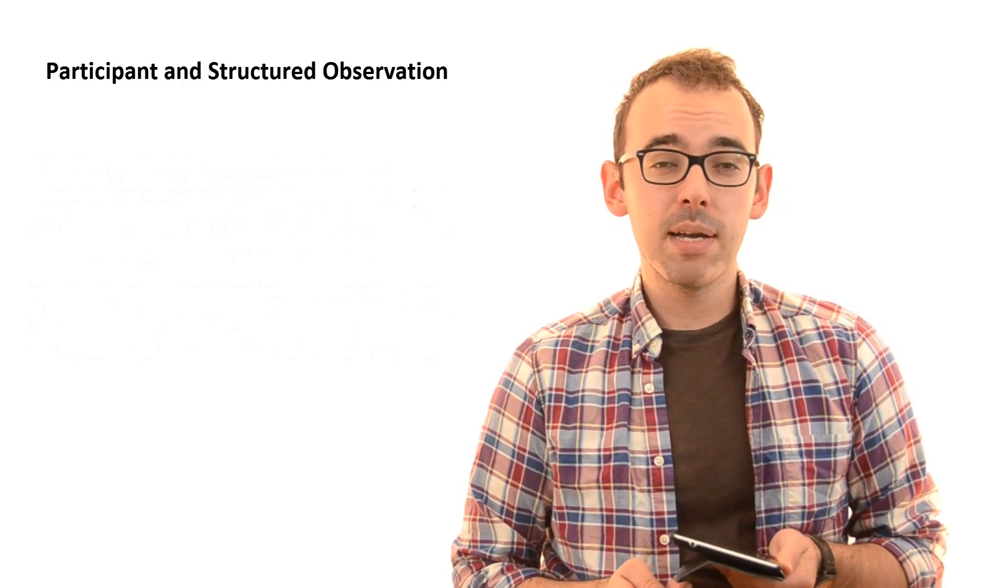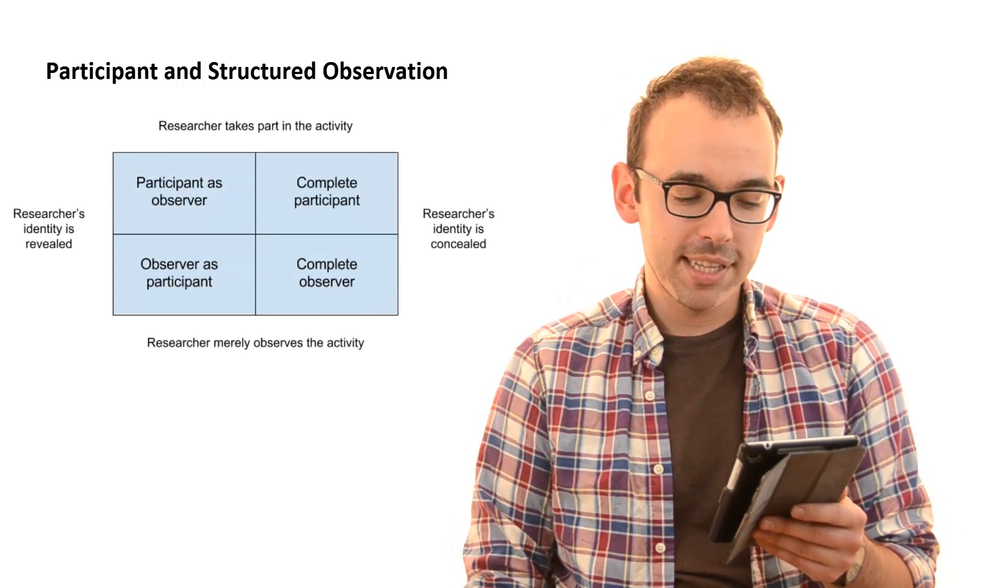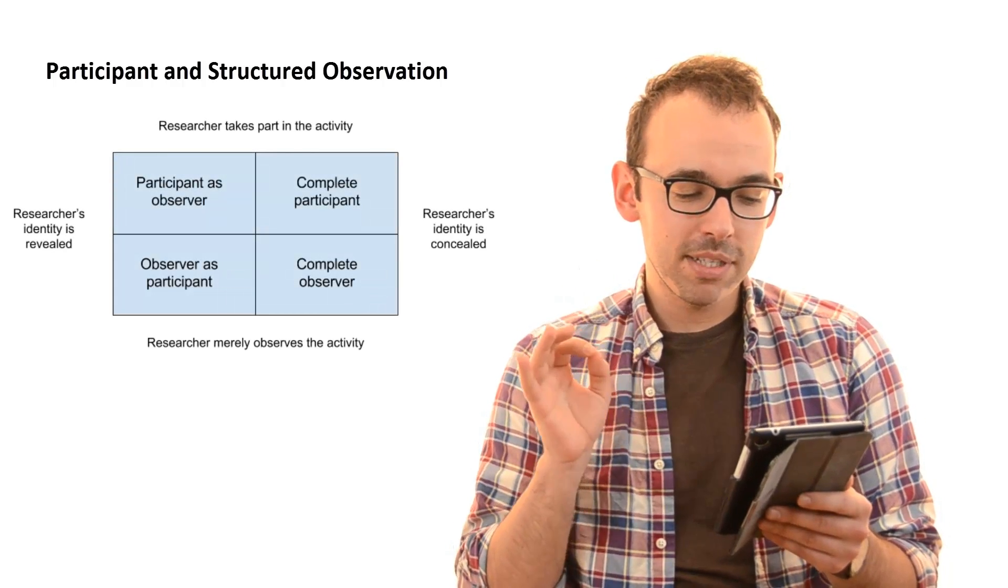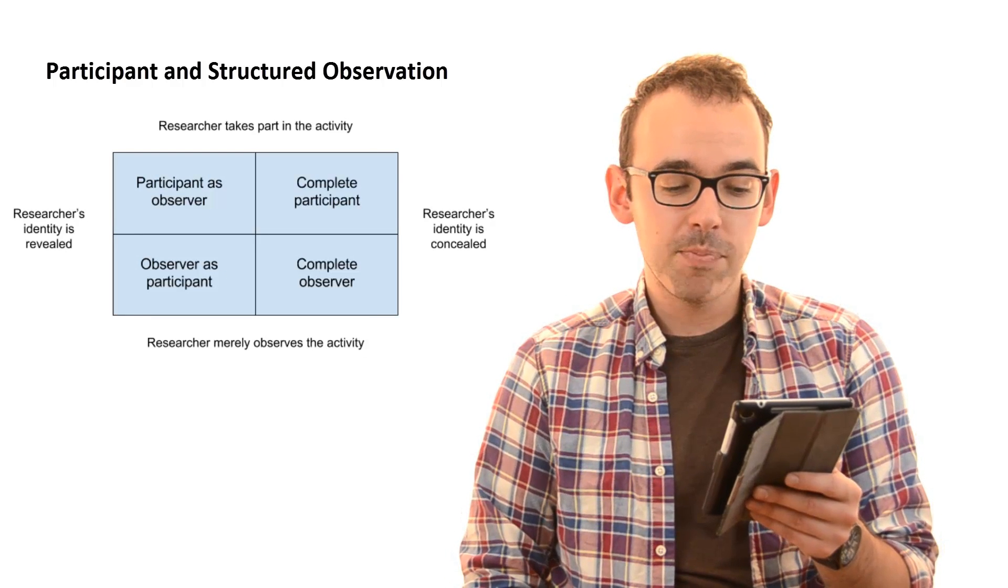So as I said, there are four types of participant observation and here is a small picture for that. As you see, we have participant as observer, complete participant, observer as participant, and complete observer.